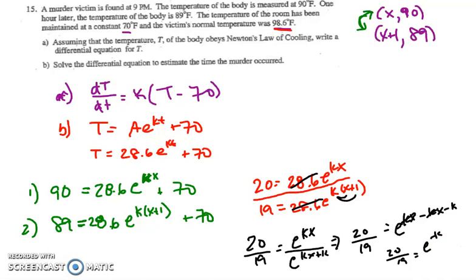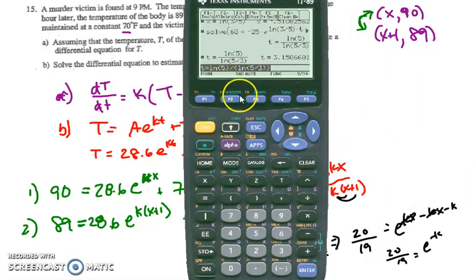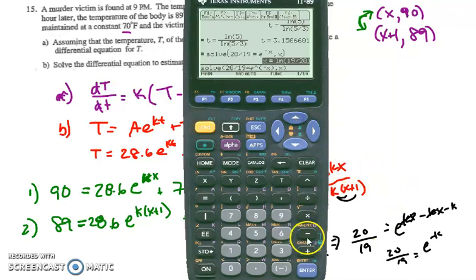So let's go ahead and pull out the calculator and solve for k. I have the solve button and then 20 divided by 19 equals e raised to negative x. Close paren on that exponent. Comma x. Close paren.